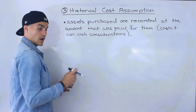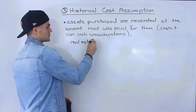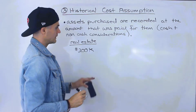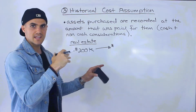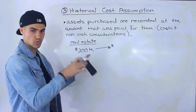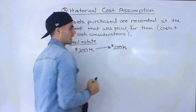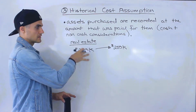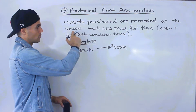Let's do a bigger example. Let's say that you have a company and you're going to buy some real estate to put your office in. Let's say you buy this real estate for $200,000. And let's say two years go by, and based on real estate bought and sold recently in your area — within the last month or two — based on those transactions and the square footage, this real estate is now worth $250,000. According to the historical cost assumption, assets purchased are recorded at the amount that was paid for them.